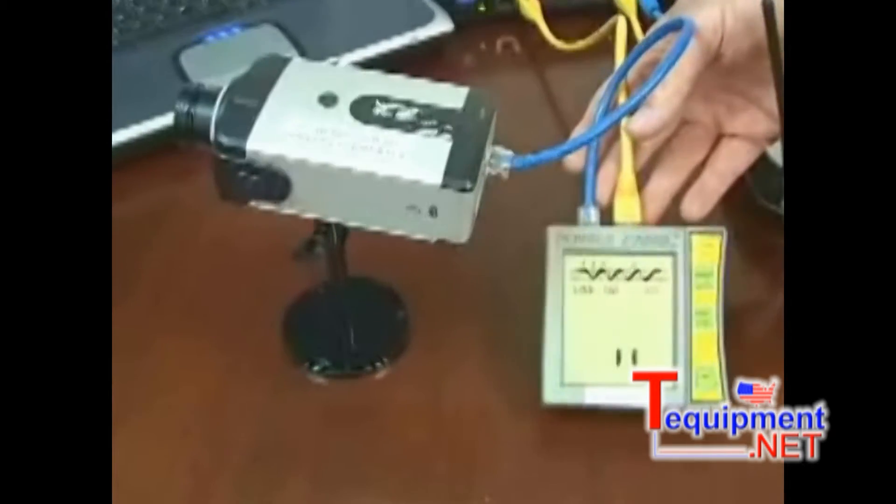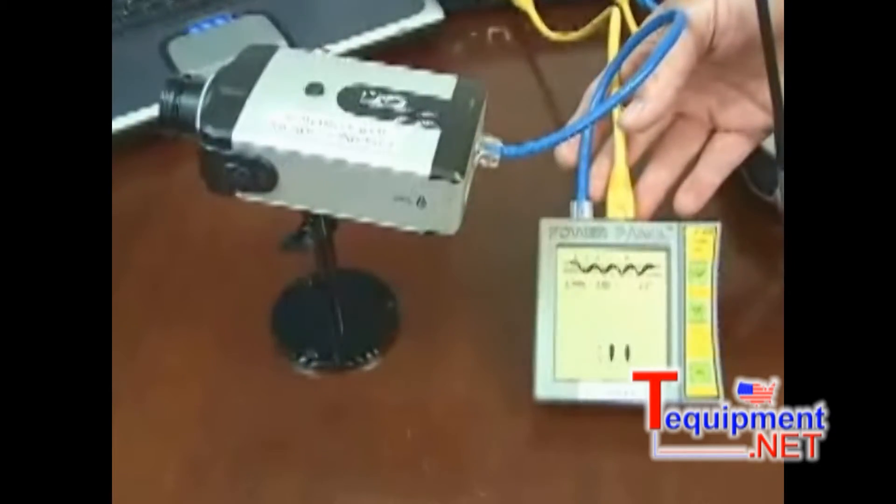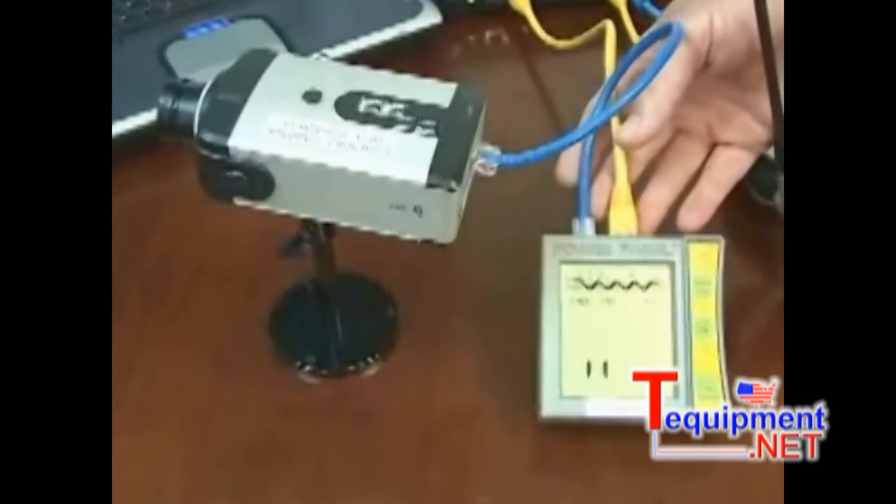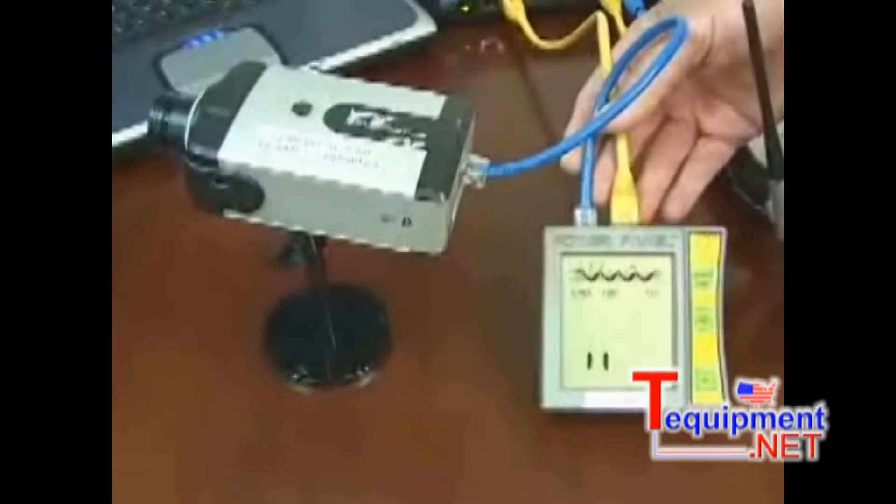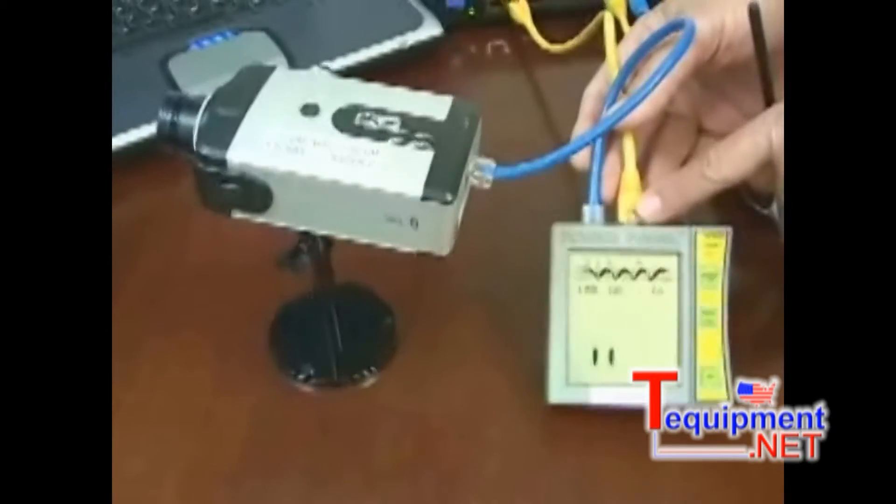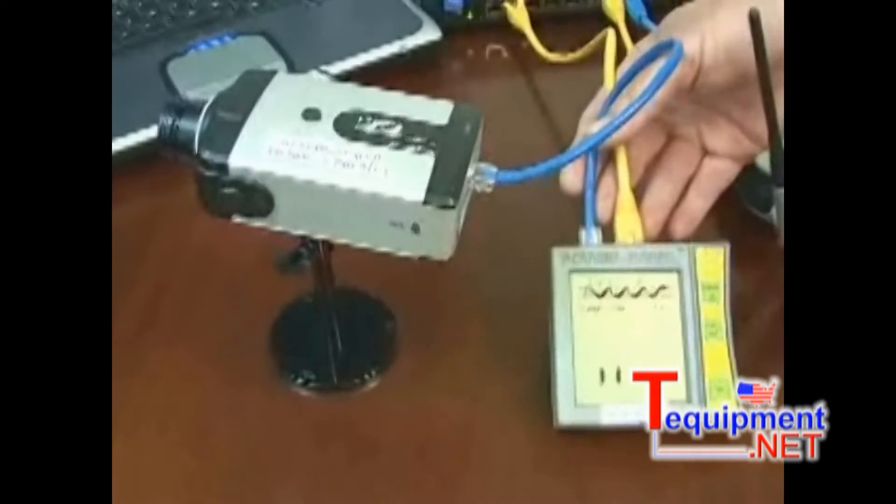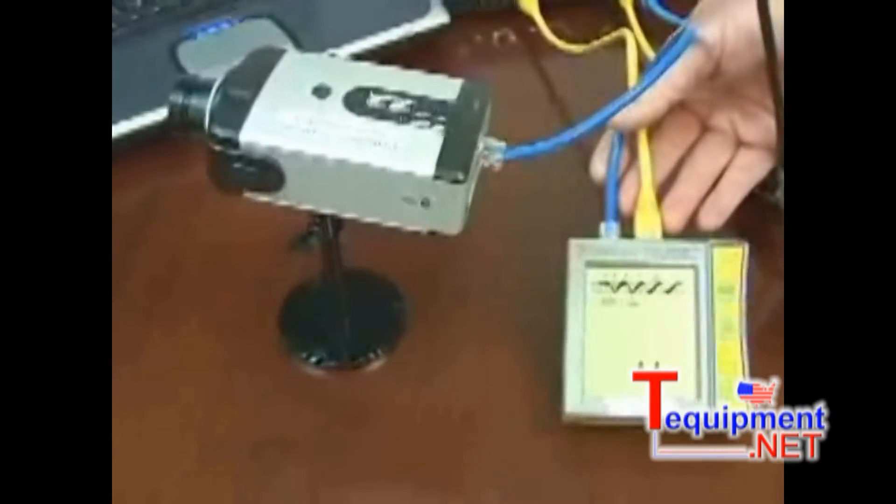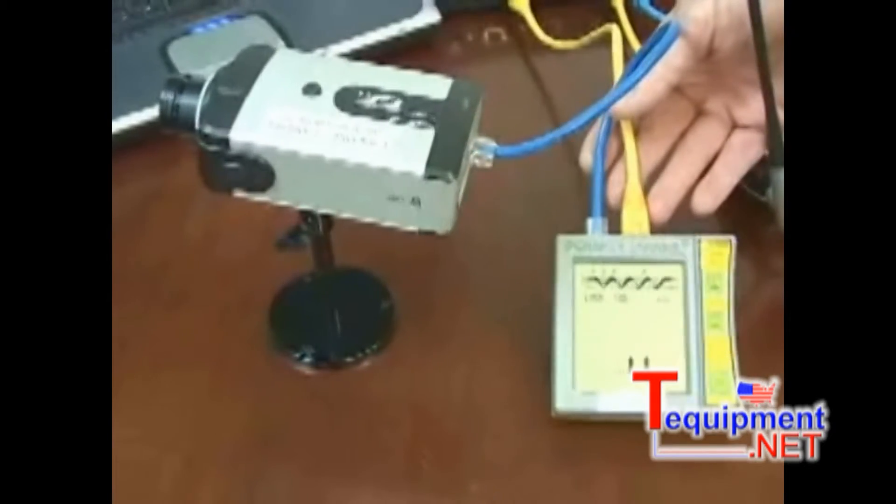But if you're an IP camera installer or you install VOIP phones, then you need the inline version because you can measure watts. And watts is the number one reason why these networks go down, drawing too much power out of the switch.